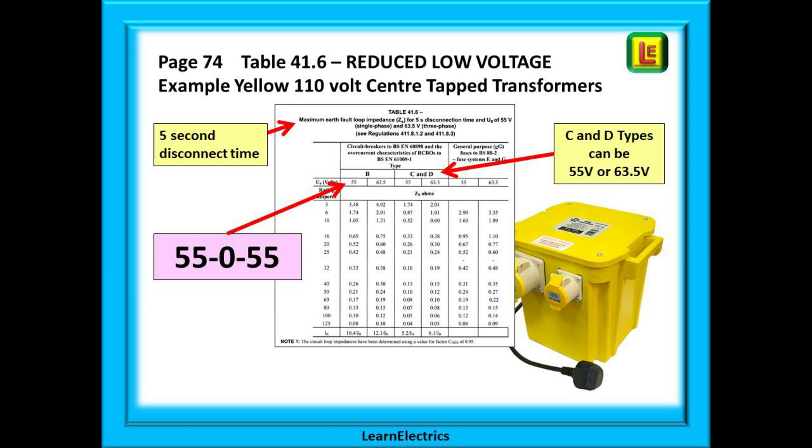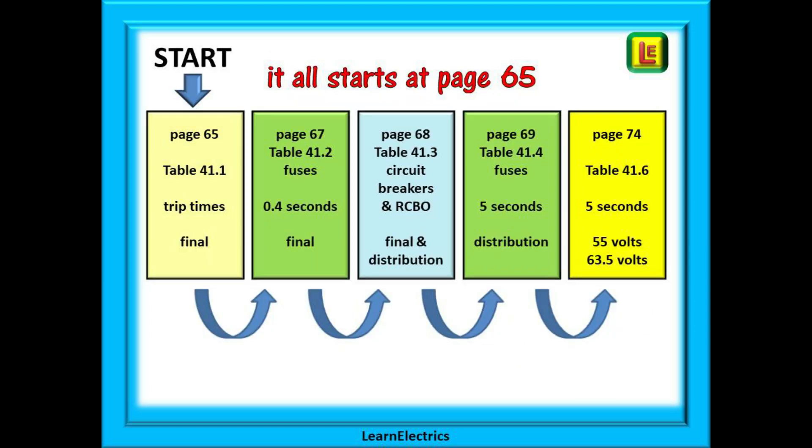Only a 5 second disconnection time applies to these circuits. And they cater for types B, C and D circuit breakers. Also, do not be confused by the C and D column. Types C can be 55 volts or 63.5 volts. And so can type D. We will do a couple of examples shortly.